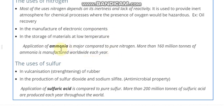Ammonia is the most important compound of nitrogen, and its applications are greater when compared to pure nitrogen. Almost 160 million tons of ammonia is produced each year throughout the world, and there are so many applications of ammonia.